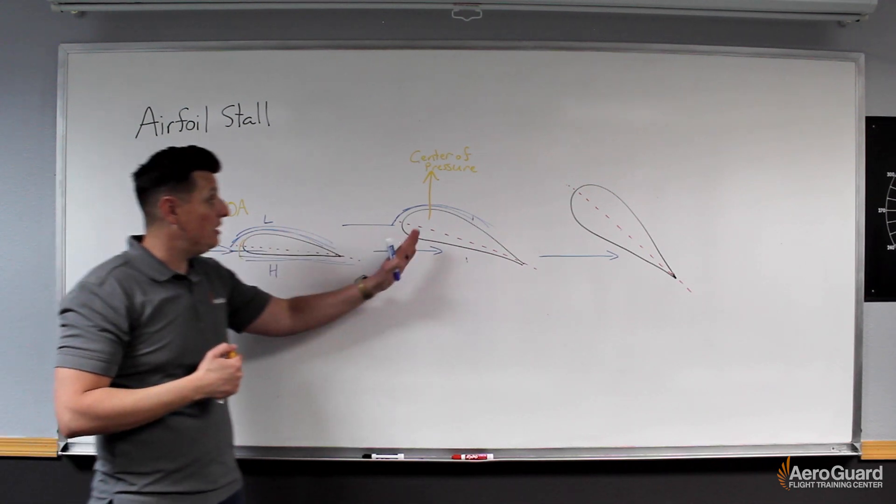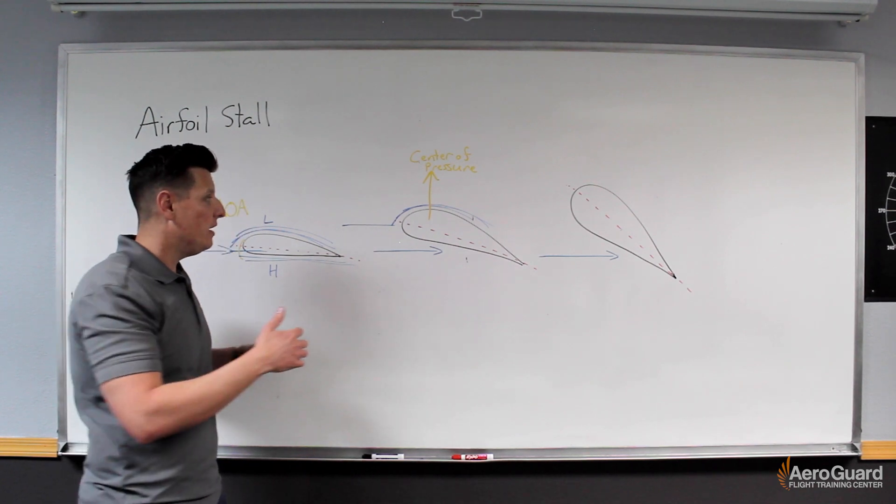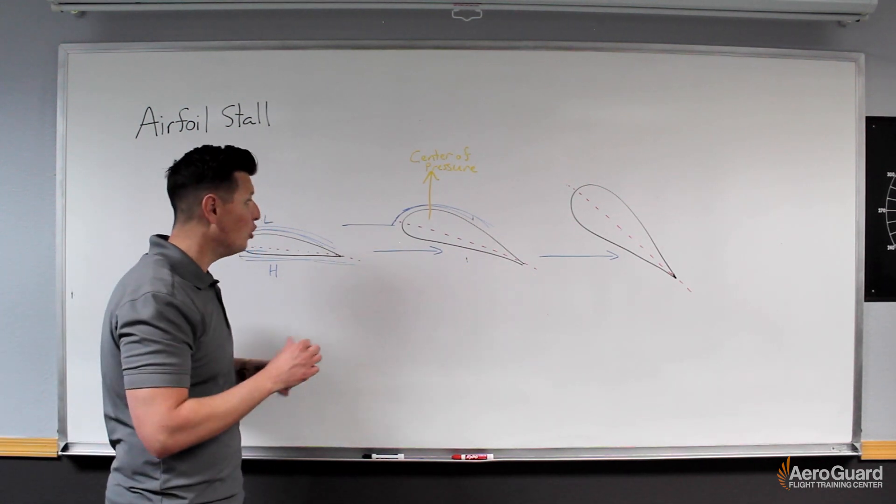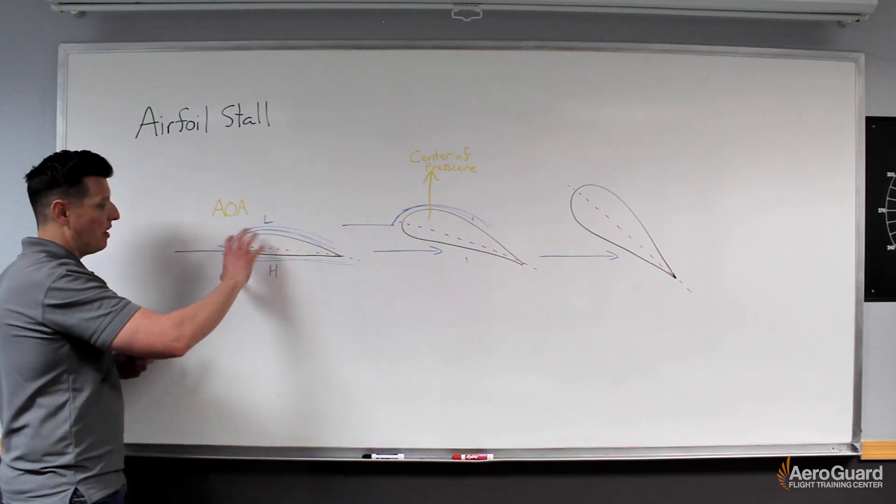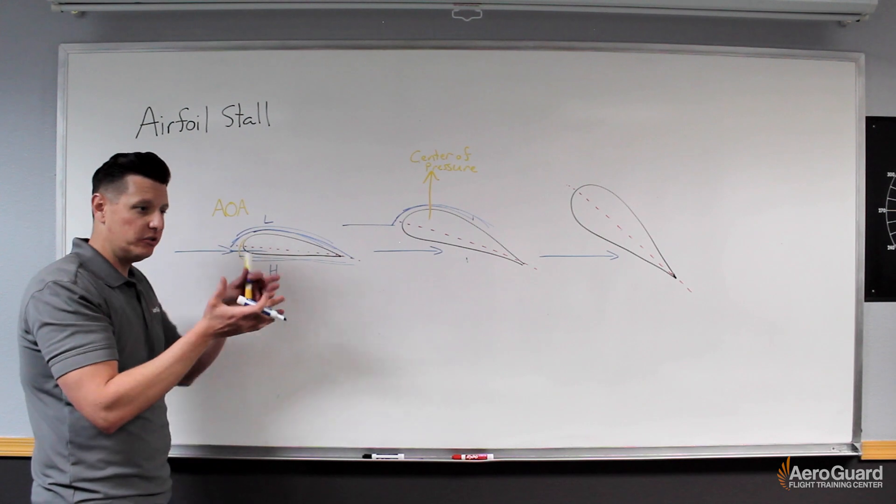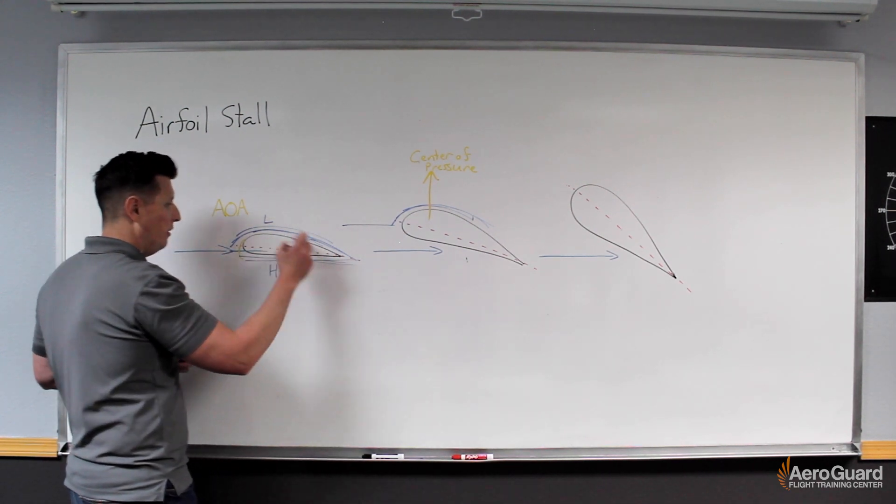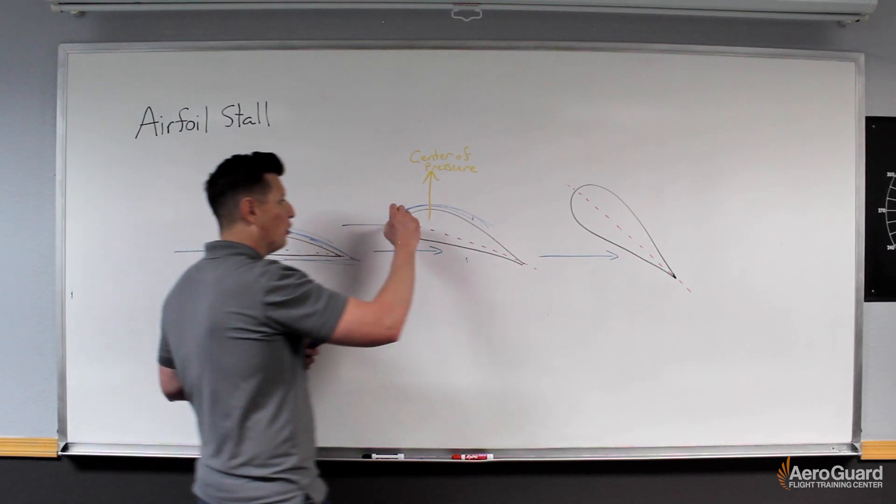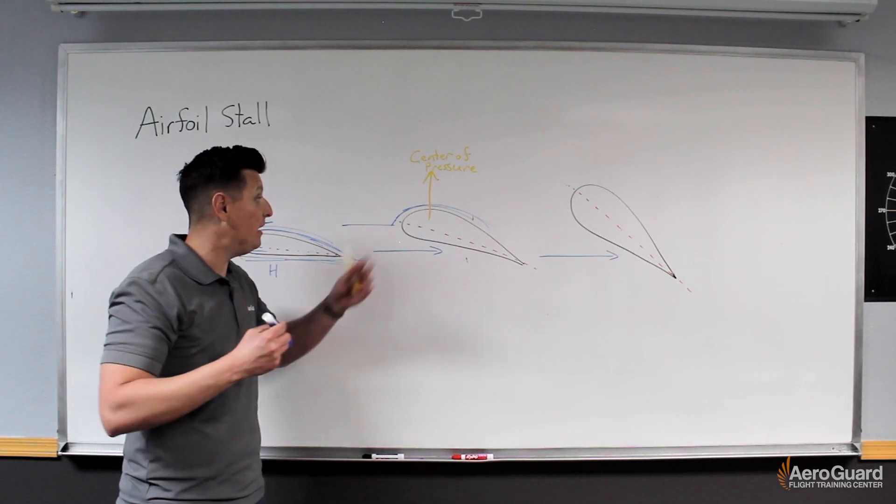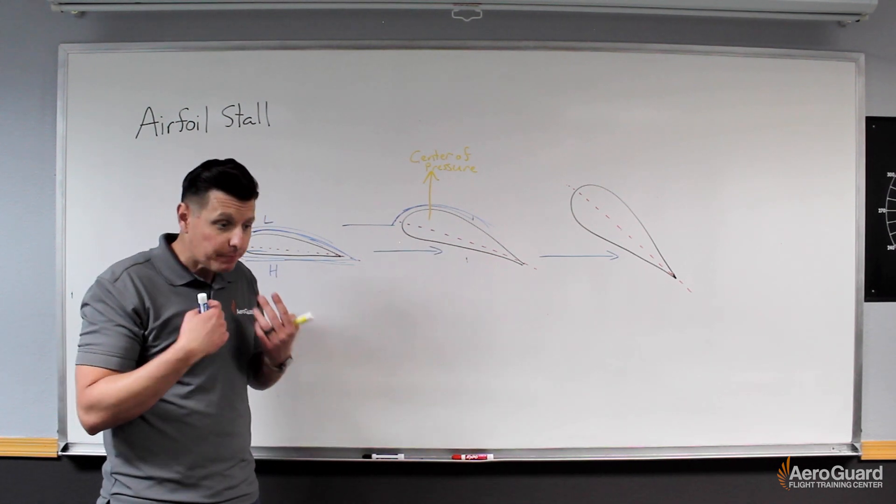Now another key element to this that's going to be important in understanding the concept of a stall is what's happening as this air continues to flow around the airfoil. In this example where we were at a relatively low angle of attack, the airflow would basically stay connected. There's this boundary layer where the air is relatively connected to the surface of the wing.